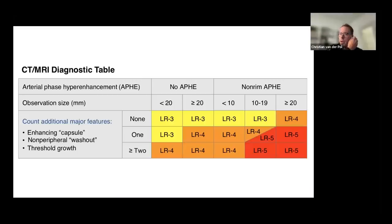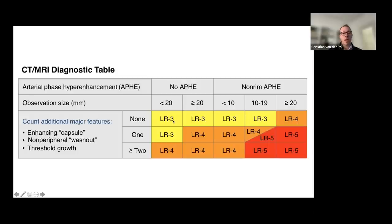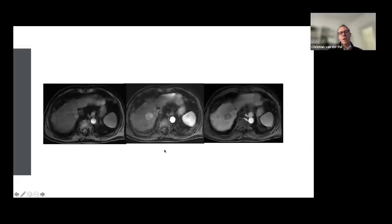LiRADS incorporates 26 imaging features on CT or MRI to establish a level of risk for each individual liver observation regarding the likelihood of HCC. There are five main drivers — the major features. Here are example axial T1 fat-saturated images through the liver: a pre-gadolinium image, an arterial phase after IV gadolinium injection where the aorta is much brighter, and a more delayed phase acquisition.